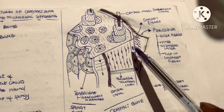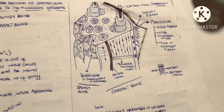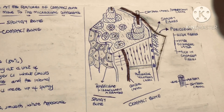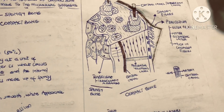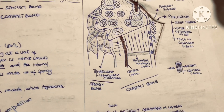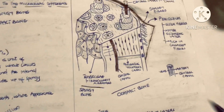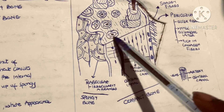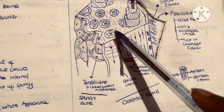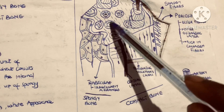The compact bone is lined by the periosteum. The bone tissue is arranged in layers — the word for the layer is called lamellae. We have many different types of layers. These layers are arranged in a circular manner, so we call them the concentric lamellae.